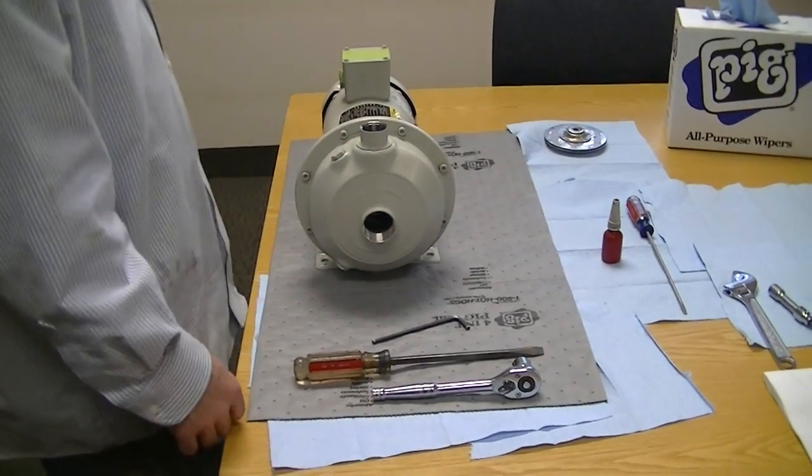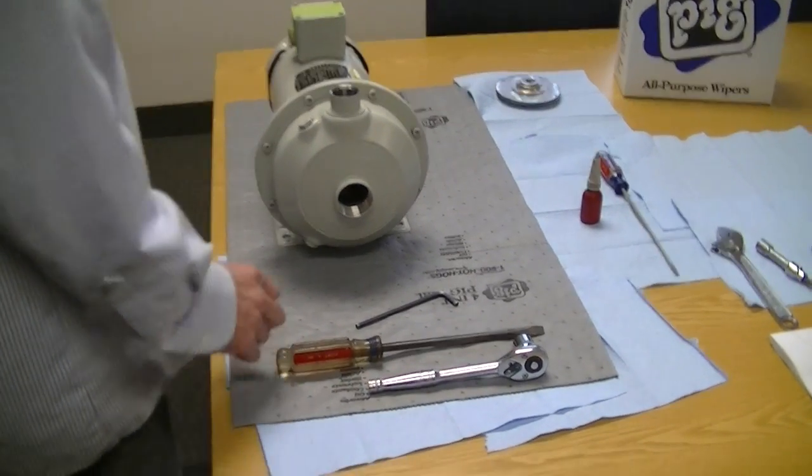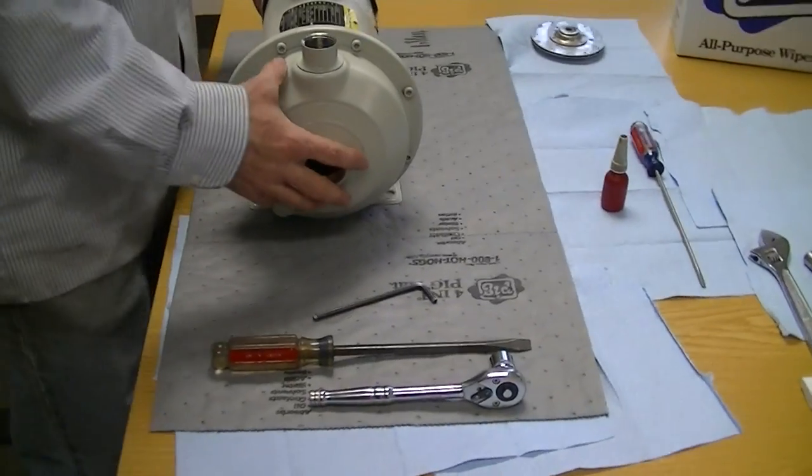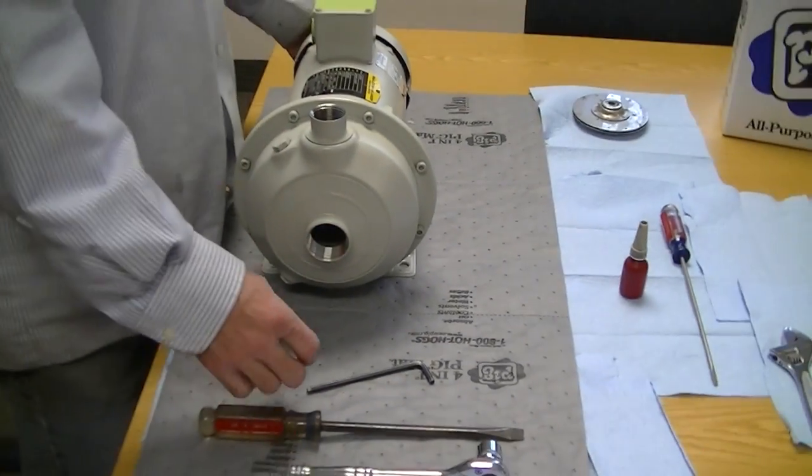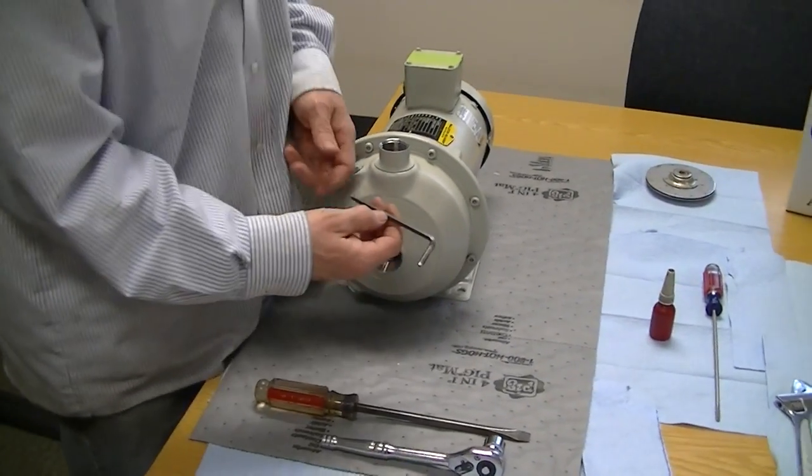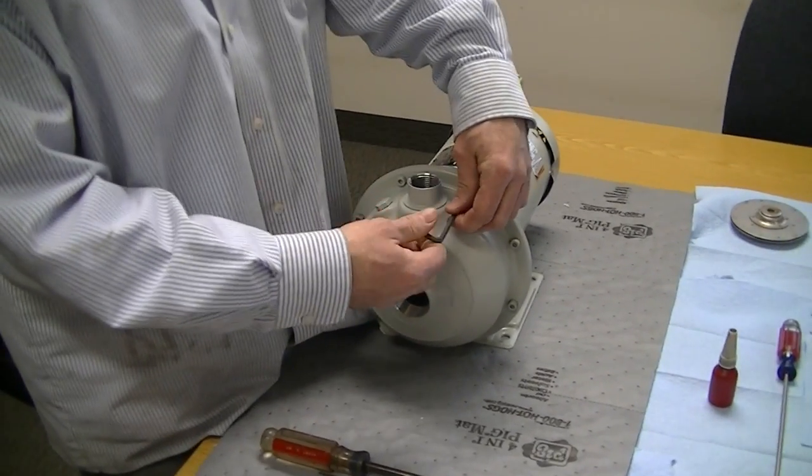I'm going to show you how to disassemble a Gould's NP pump to replace a shaft seal and/or impeller. First thing I'm going to use is a 5mm Allen wrench for all your volute bolts.